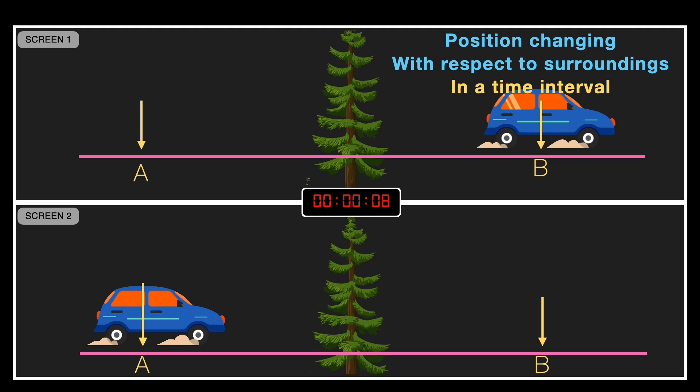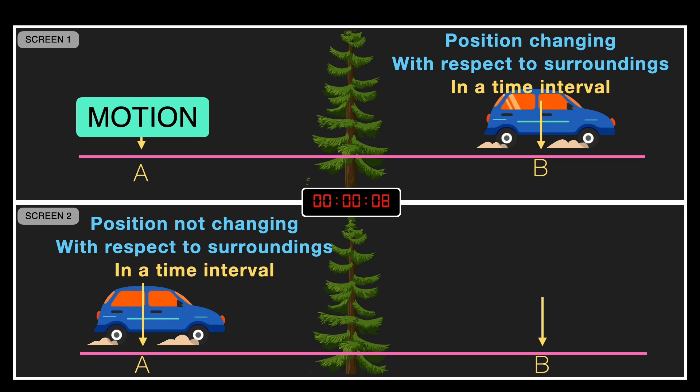That's the key. This comparison gives us a clear way to define motion. If an object's position is changing with respect to its surroundings in a given time interval, we say the object is in motion. And if the position is not changing with respect to the surroundings in a time interval, we say the object is at rest. In this case, the tree hasn't moved at all with respect to its surroundings — it stayed rooted at the same position as time passed. So we can say the tree is at rest and the car is in motion.